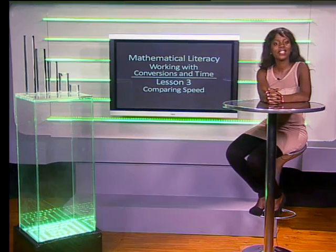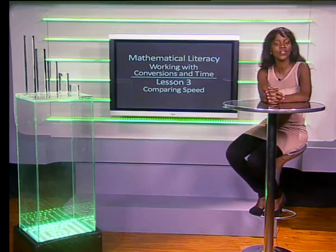Hello everyone. In today's lesson we're going to use the formula for speed and the conversion of units to make a comparison between two different values. We will compare the speed of the 2013 world record holder in the 100 meter sprint with the fastest antelope, the Tsetzer B, and calculate who is faster.